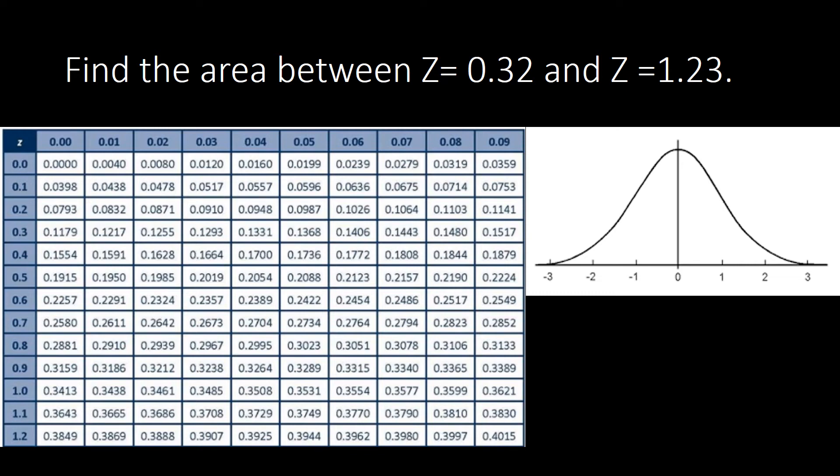Hello once again, this is your teacher Jenny. Join me for another discussion of finding the area under the normal curve. Our problem: find the area between z equal to 0.32 and z equal to 1.23.